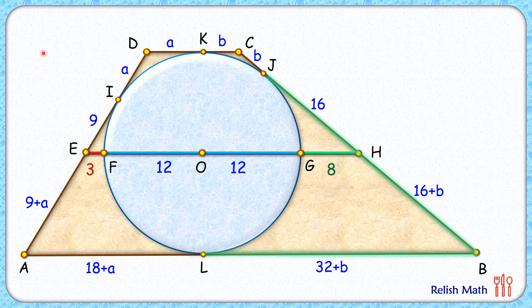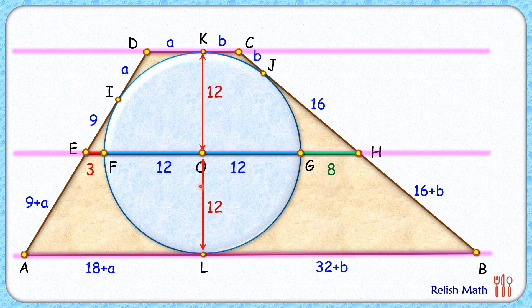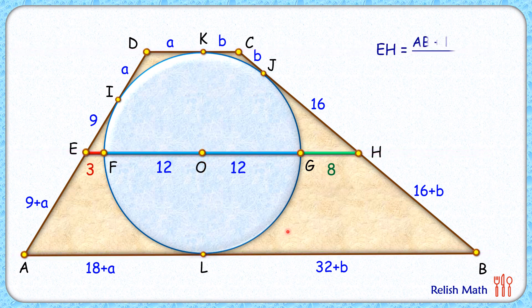Again if we take this line CD, EH, and AB, these are parallel to each other and equidistant, and by theorem DC, EH, and AB their lengths will be in arithmetic progression. Or we can say that the length EH will be AB plus DC divided by 2.